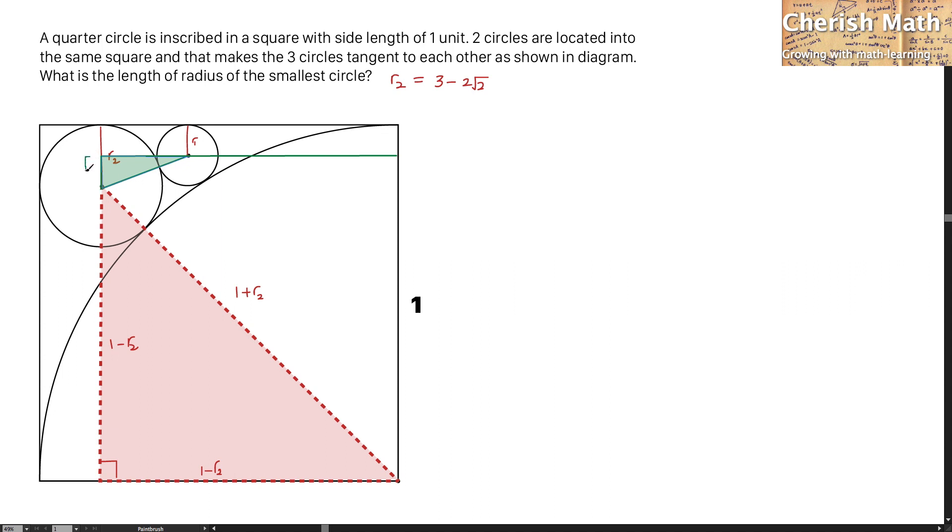For this part, it is going to be R2 minus R1. And for this center of the biggest circle, connecting the center of the smaller circle, that would be the sum of the radius of the two triangles.